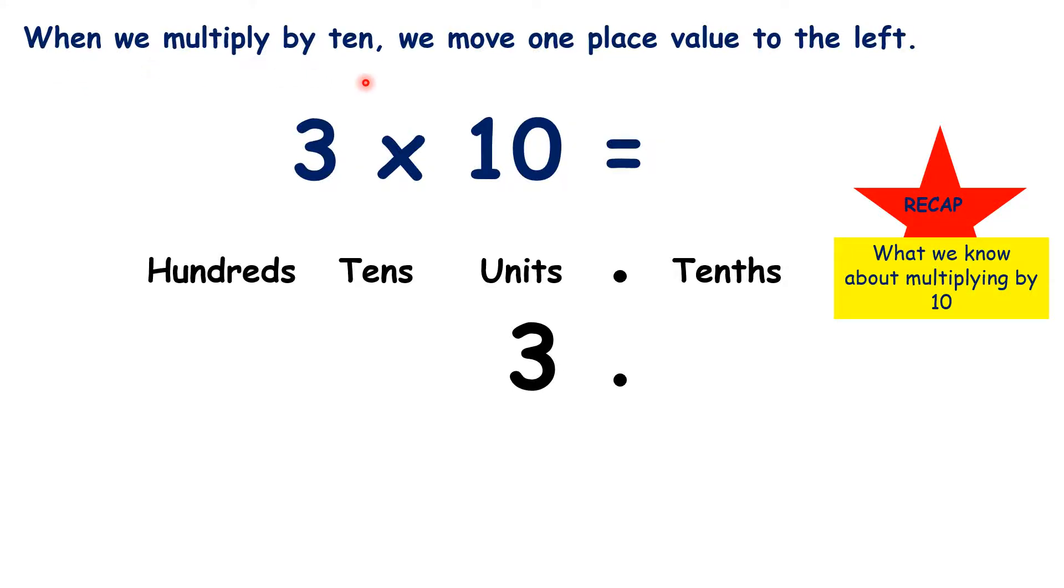When we multiply by 10, we move one place value to the left. So with 3 times 10, we move the 3 one place to the left, so it's moved from the units to the tens column. And then, if we have empty place value columns before the decimal point, we write a 0.